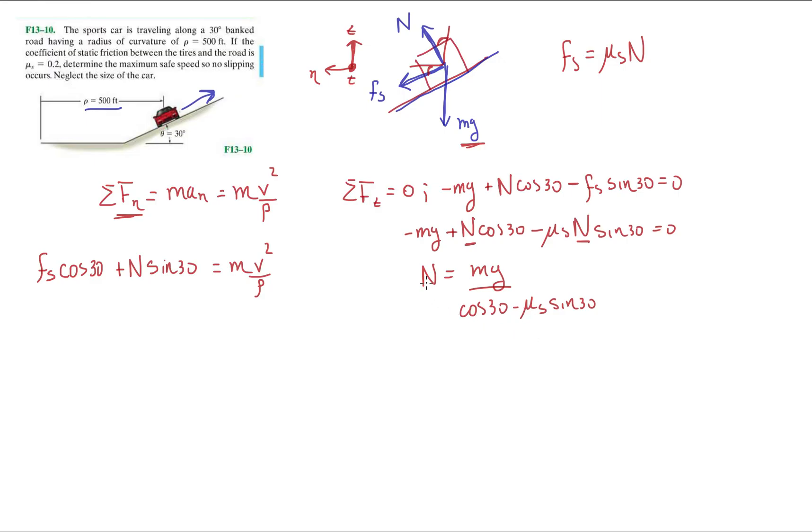So we have two equations, two unknowns. So we're going to do the normal is equal to mg over cosine 30 minus mu s sine 30. So we have this tiny bit of information here. Now we're going to plug this into this other equation that we've established already. Let's write it the long way.